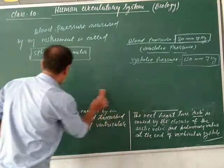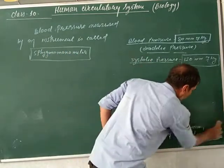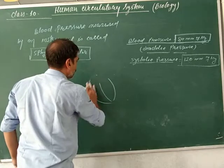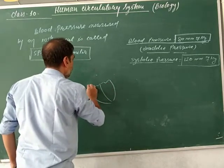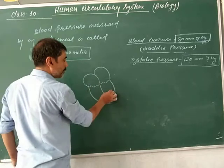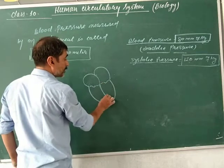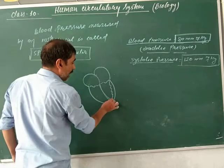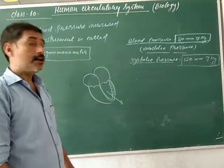Now, once again, we will talk about the heart structure. This is the tricuspid valve, bicuspid valve, left atrium, right atrium, left ventricle, and right ventricle. These are separated by the septum. The left ventricle has a thicker wall because it pumps blood with high pressure to all parts of the body.